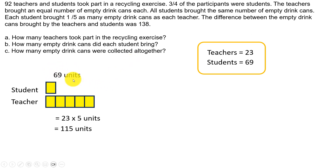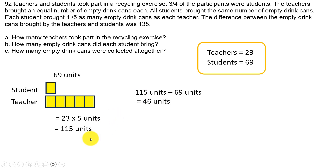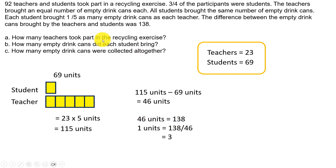So the difference between the 69 units brought by the students and the 115 units brought by the teachers is 138. So 115 units minus 69 units equals 46 units. Now we know that 46 units is equal to 138. So 1 unit is equal to 138 divided by 46, which is equal to 3. How many empty drink cans did each student bring? Each student brought 3 empty drink cans, because 1 unit equals 3.